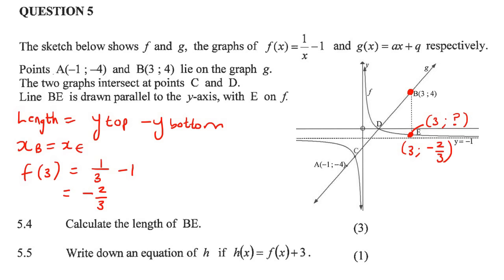So now to find the length of BE, you just take the y-value of the top one, which is 4, minus the y-value of the bottom one, which is now negative 2/3. And so you're going to end up saying 4 plus 2/3. And you could write the answer as 4 and 2/3, or you could even write it as 14 over 3. It's up to you.